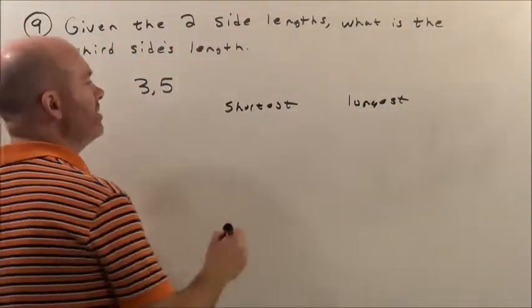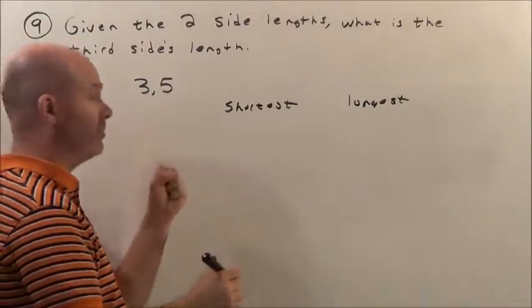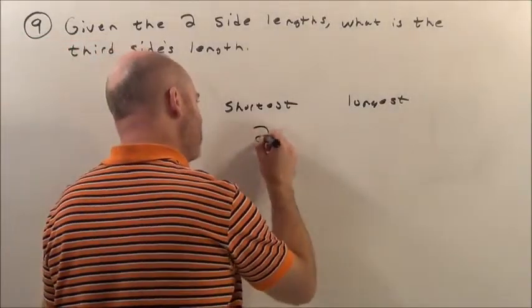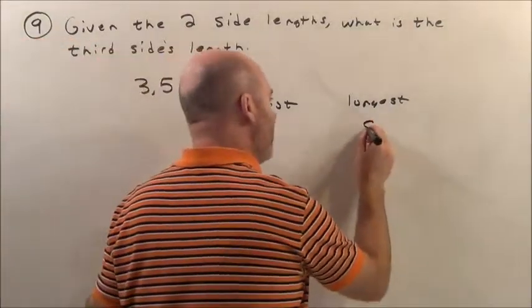A quick way to get the shortest is you subtract them. So if I subtract 5 and 3, the shortest would be 2. I add them, the longest would be 8.